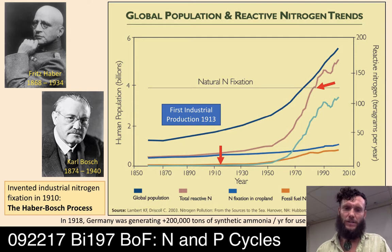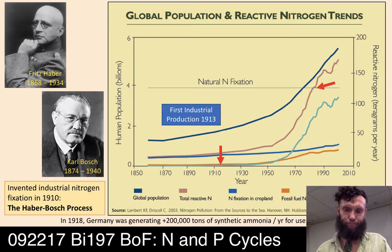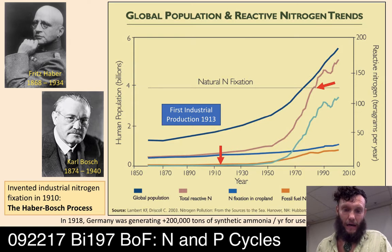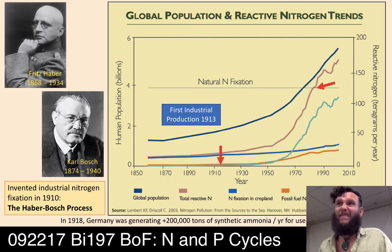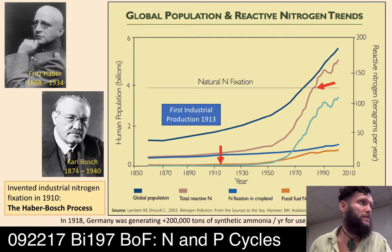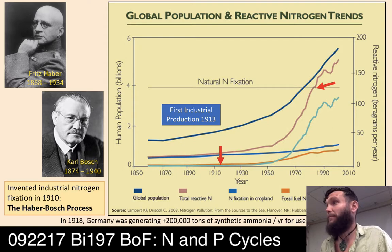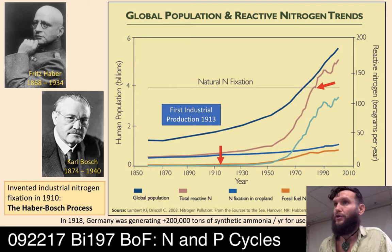This fixation of nitrogen has driven the global population explosion. By 1918, Germany was generating over 200,000 tons of synthetic ammonia per year for use in fertilizers and explosives — only five years after the chemical process was developed. Think about that: this is just from gas they're pulling out of the atmosphere. A pretty remarkable transformation in a very short period of time.